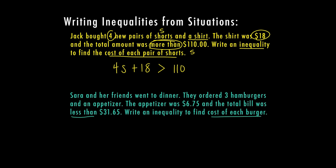All right. Well, I know I'm looking for burgers. That's my variable. And I'm going to have three of those. So that's 3B. And the appetizer was something else I bought that cost $6.75. And I know all of this together cost less than $31.65. So we'll go ahead and solve this one.